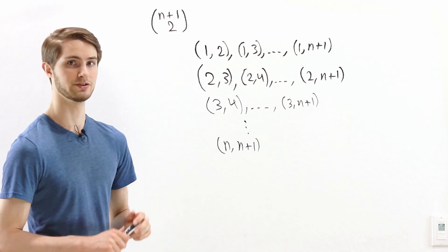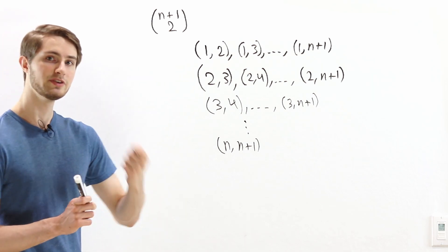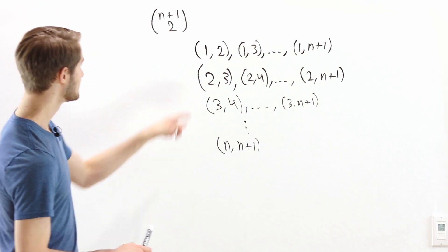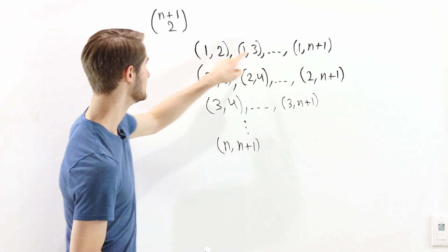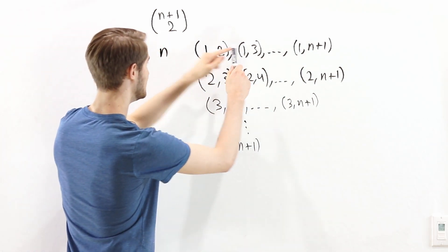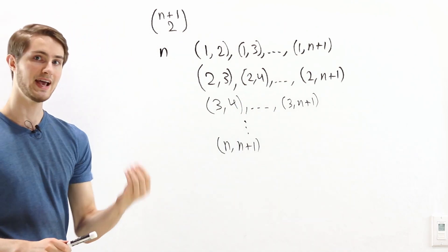And let's count how many there are. The number of integers from 1 to n plus 1 is n plus 1. So the number of integers from 2 to n plus 1 is n. Which means that the number of pairs in this row is equal to n.